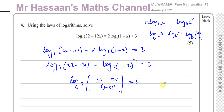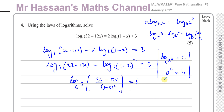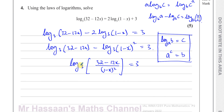After this, I can rewrite this in index form — converting from log form to index form. We know that log base a of b equals c can be rewritten so that a is the base, c is the power, and b is the result. So this is the base, this is the power, and this is the result.